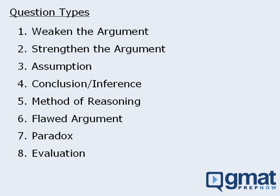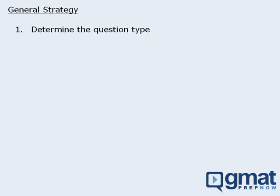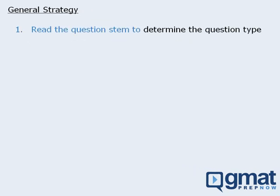So, whenever we encounter a critical reasoning question, our very first step in the general strategy will be to determine the question type as soon as possible. How do we determine the question type? By reading the question stem first. By reading the question stem, we should be able to determine the question type.